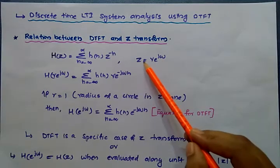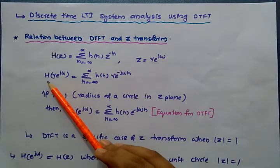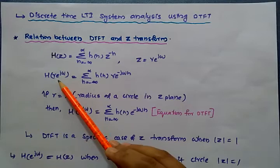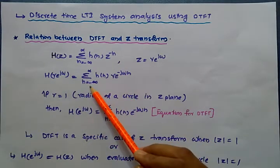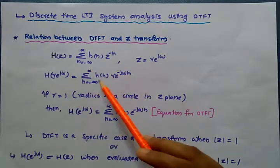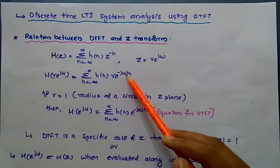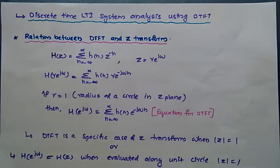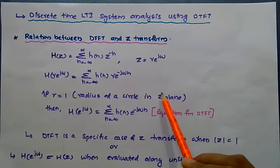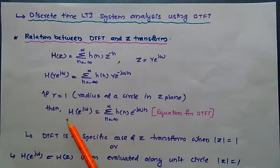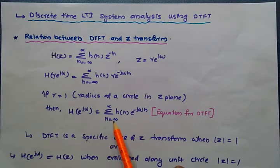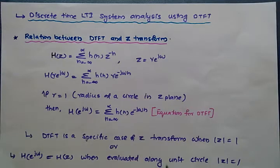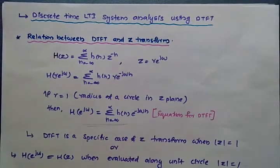We substitute the value of Z into this equation. The equation becomes: H(R e^{j omega}) = summation from N equal to minus infinity to infinity of H(N) times R e raised to minus j omega N. If the value of R is 1 — that is, the radius of the circle in the Z-plane is 1 — then this equation becomes H(e^{j omega}) = summation from N equal to minus infinity to infinity of H(N) e raised to minus j omega N. This is the equation for DTFT.